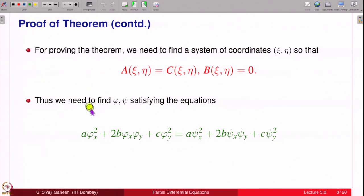a equal to c means this equation must be satisfied, and b equal to 0 means this equation is satisfied.